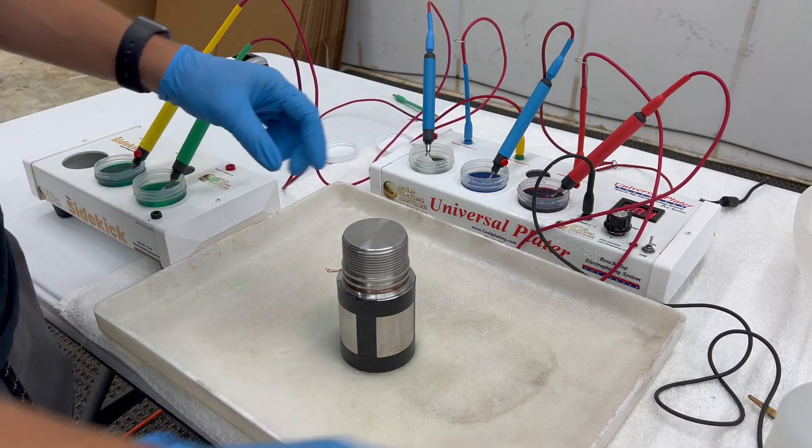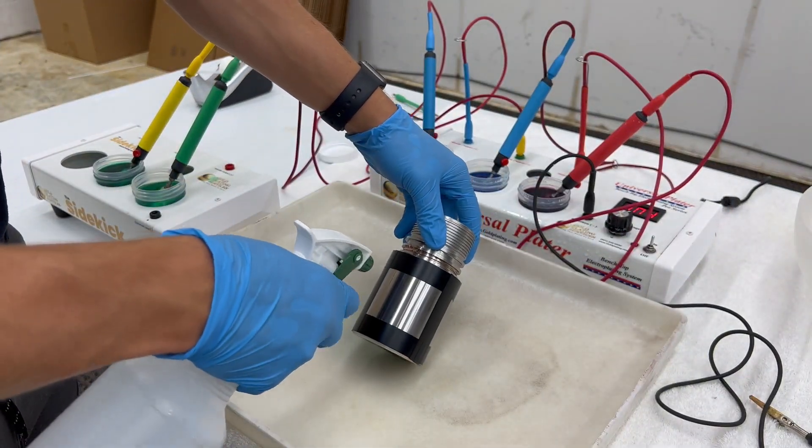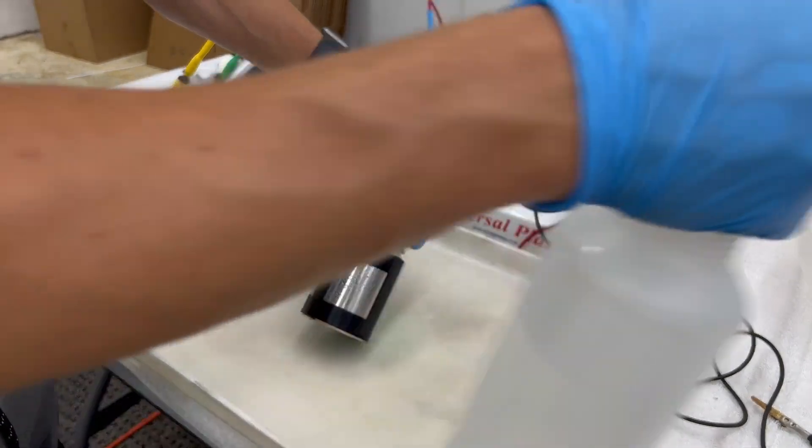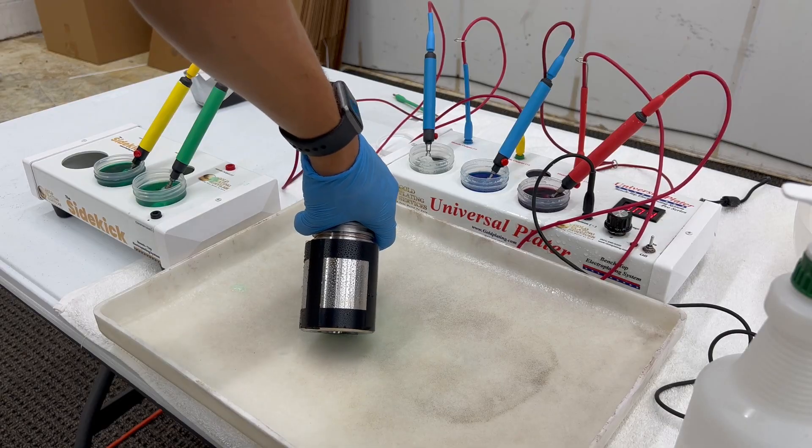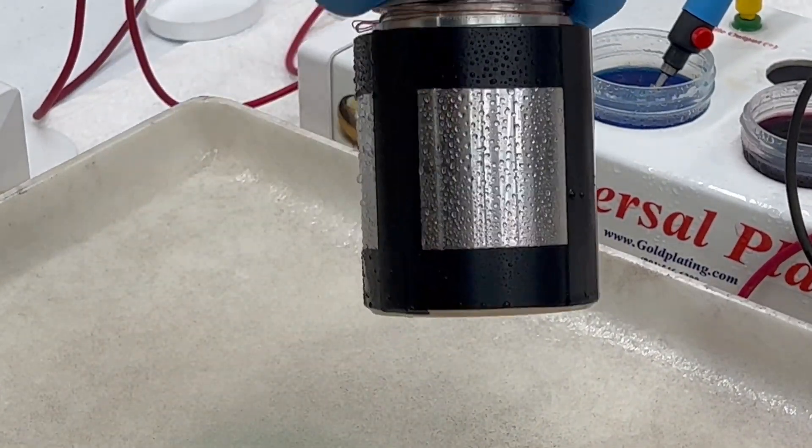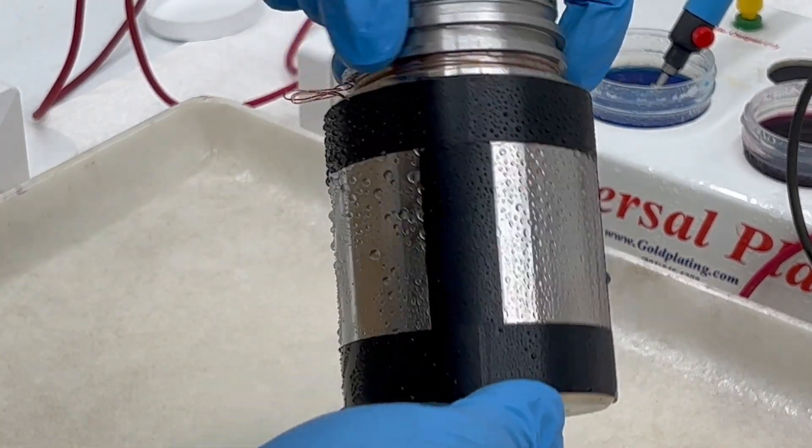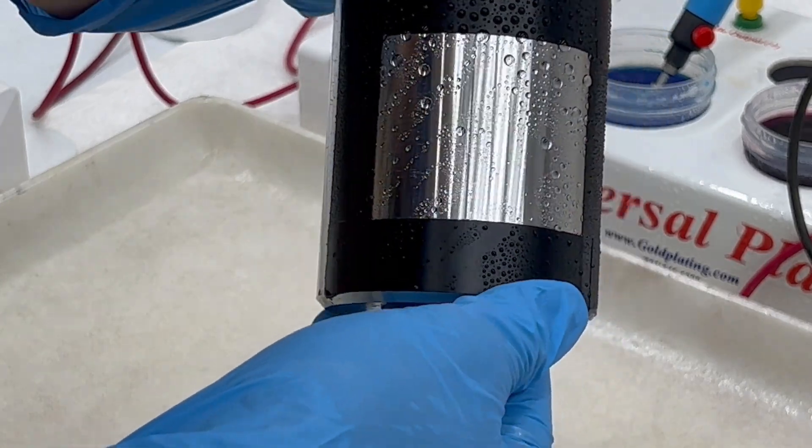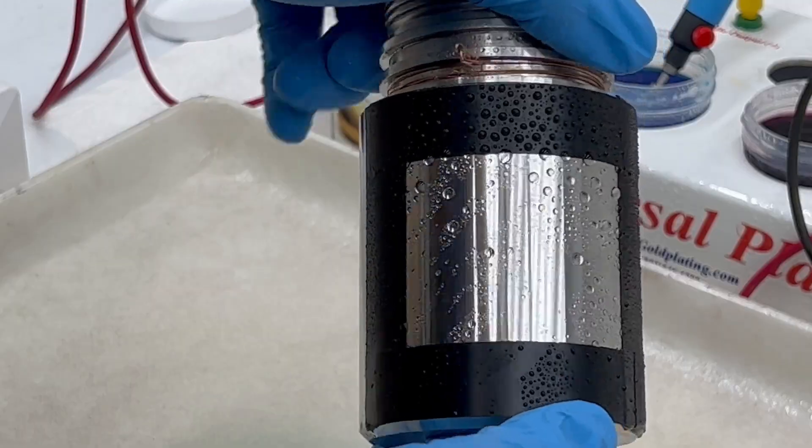We are going to start off with our electro clean, but first we're going to just see the difference between it being wetted out and it not wetting out. If we zoom in, this is it not wetted out—it's all beading up and we need it to be the opposite where the water is sticking to it.